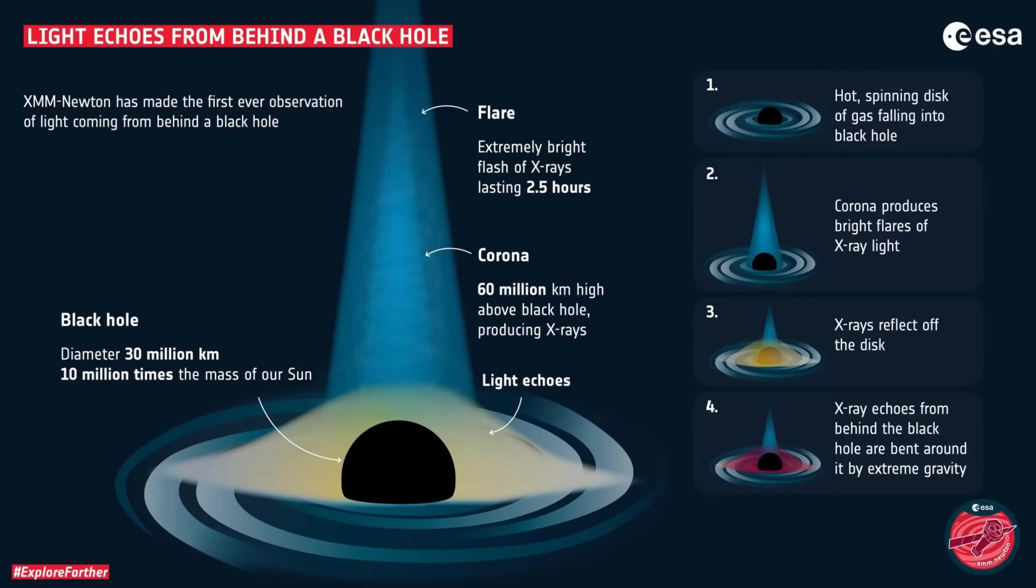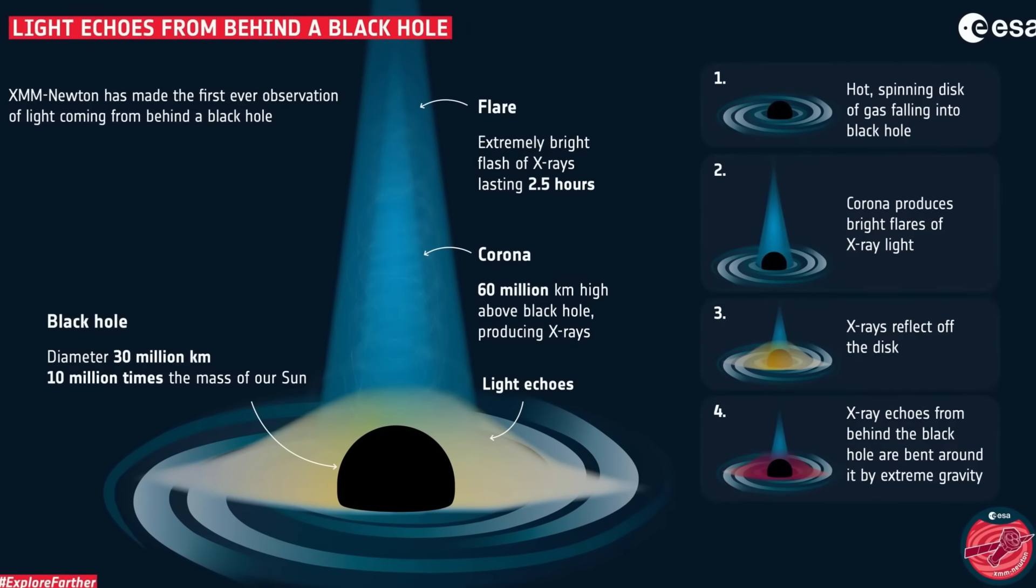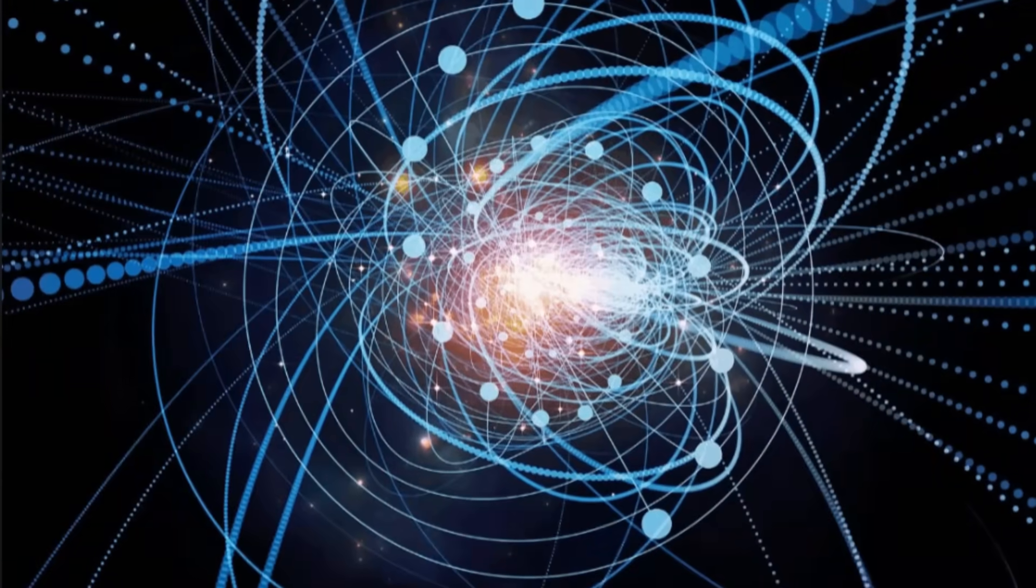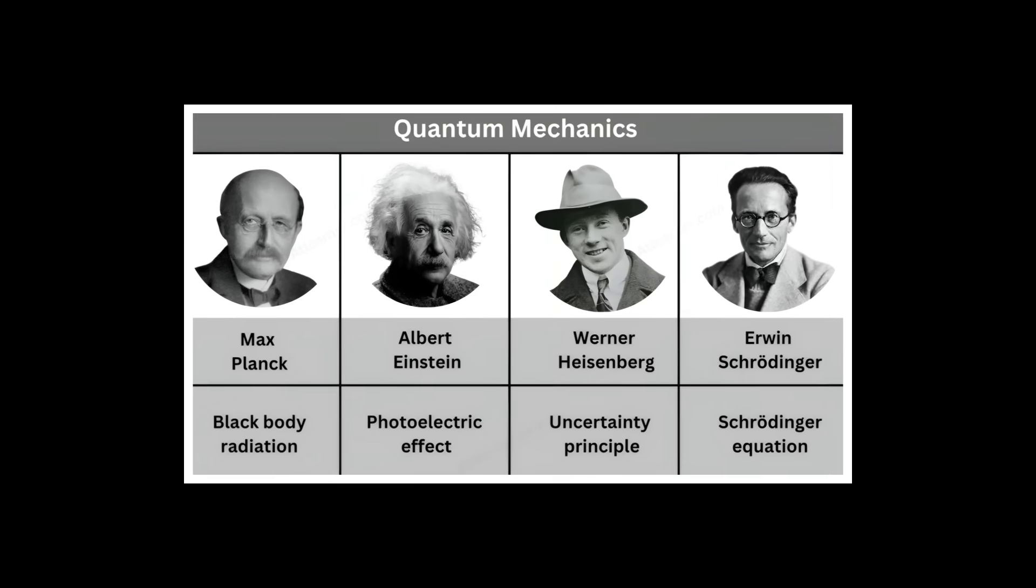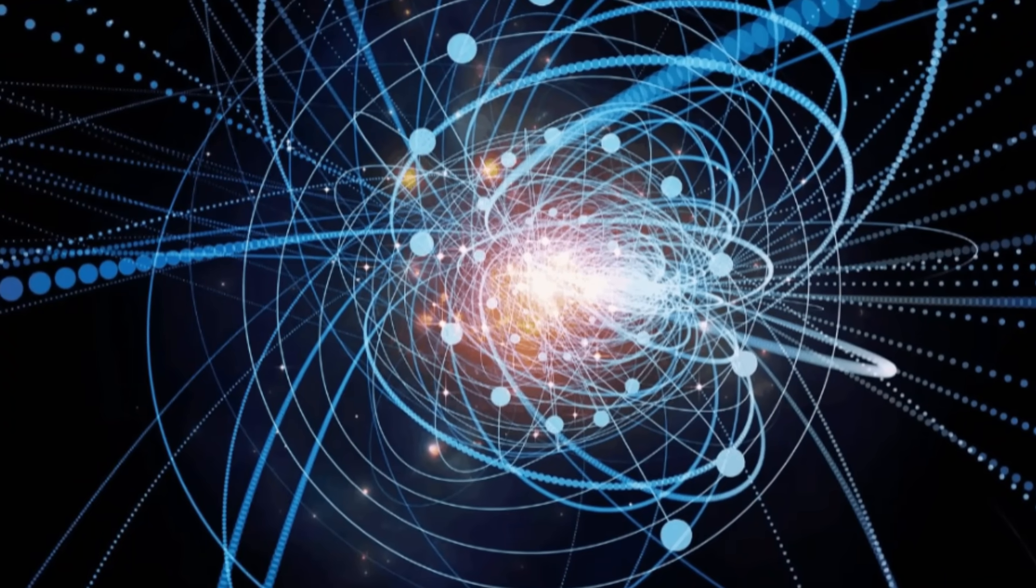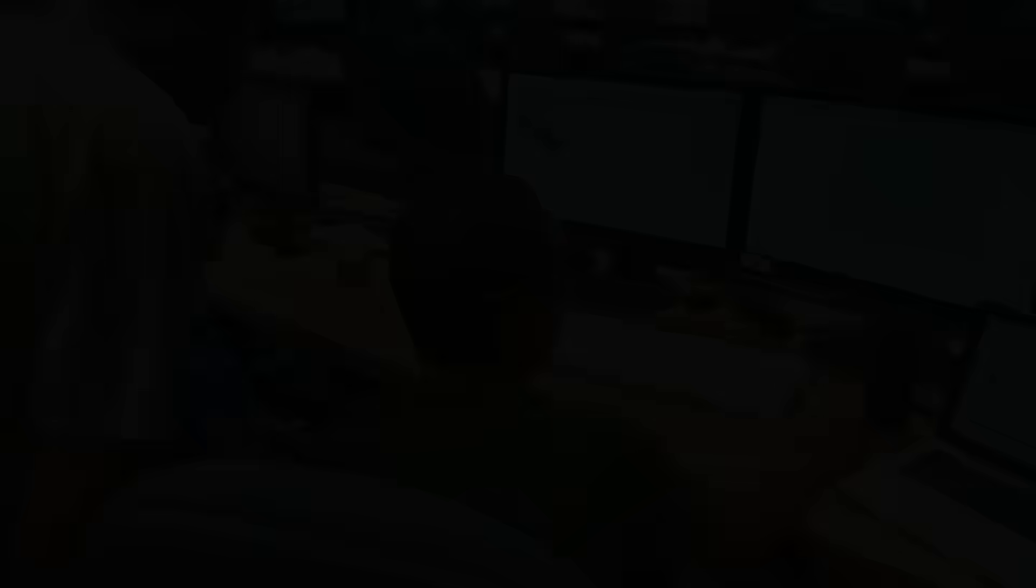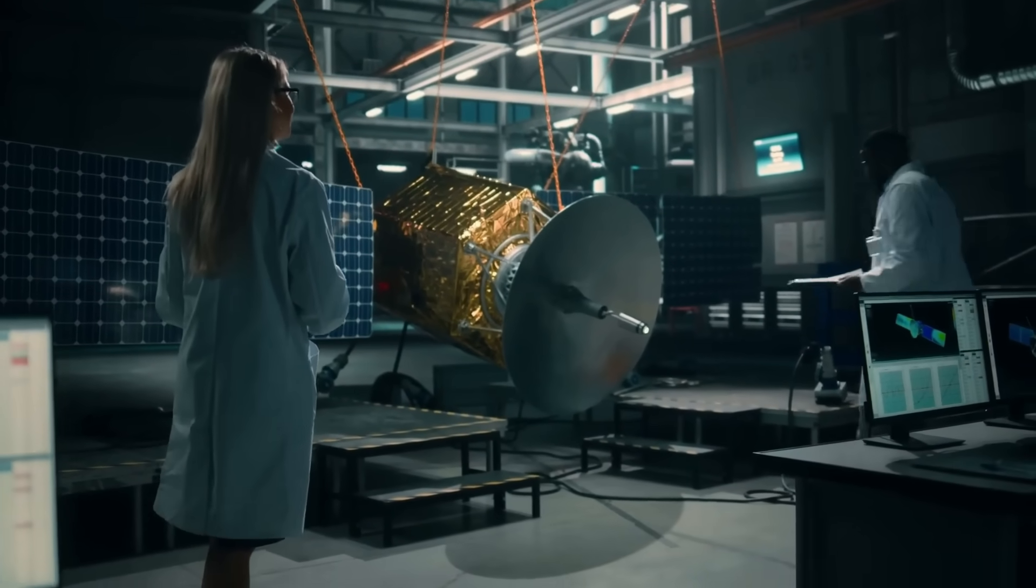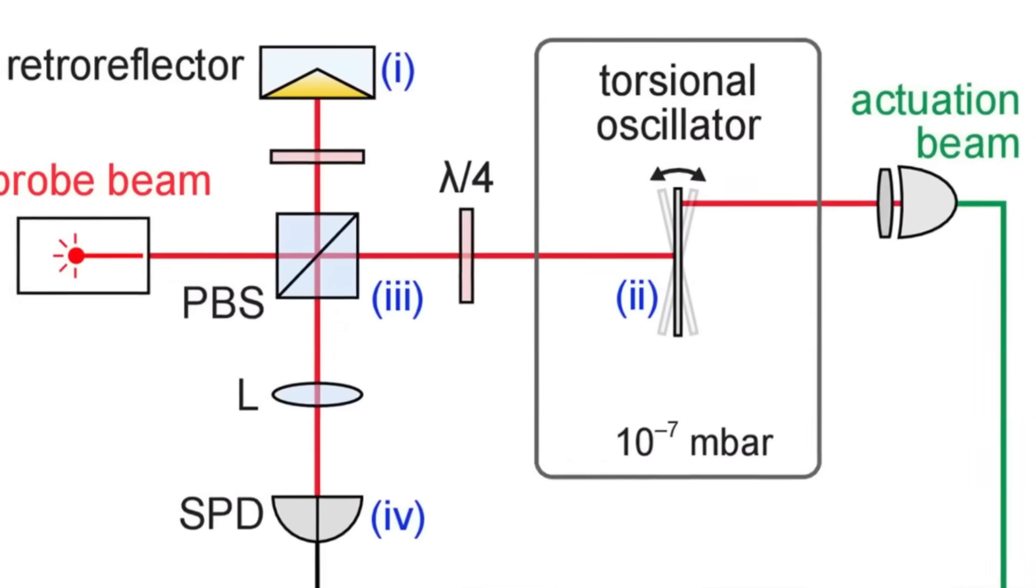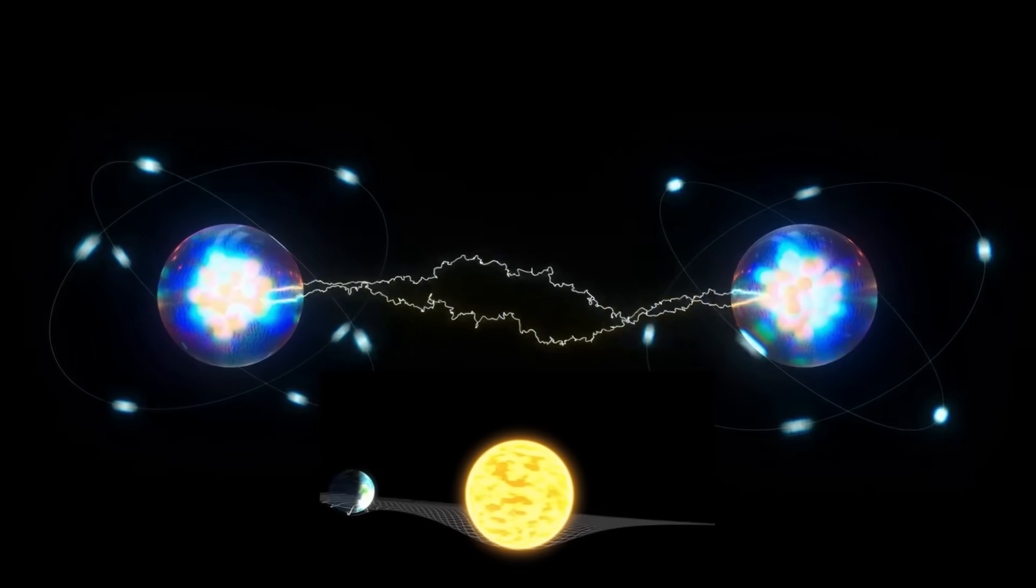But here's the twist. Governments are watching these developments closely, and for good reason. Quantum gravity sensors aren't just academic curiosities. They're strategic technologies with profound implications for national security. DARPA and other defense agencies have invested millions in quantum sensing technology. These devices can detect underground structures, bunkers, and tunnels that remain invisible to conventional methods. A breakthrough in quantum gravity detection could revolutionize everything from mineral exploration to military surveillance. If MIT's anomaly represents new physics, the nation that masters it first gains an incalculable advantage.